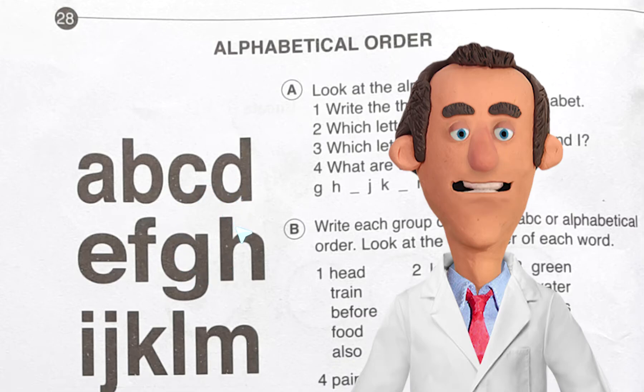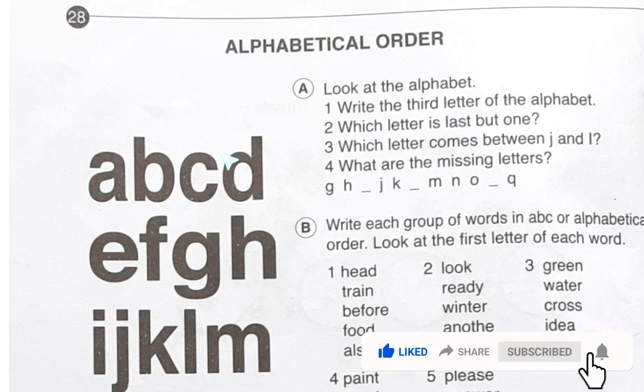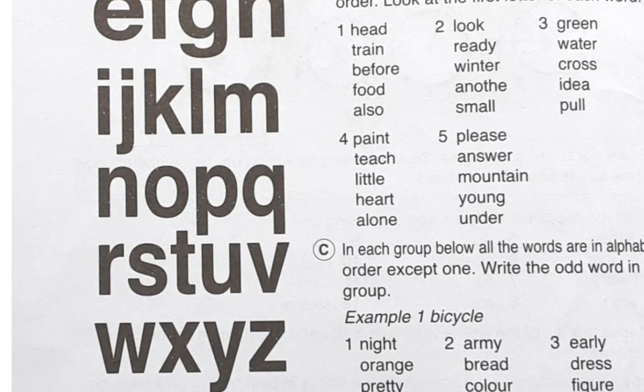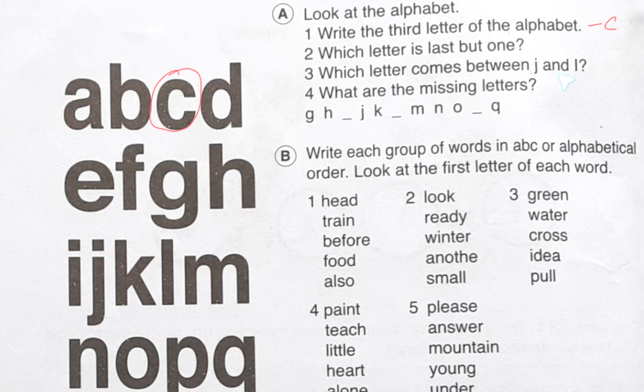Look at the alphabet. Write the third letter of the alphabet. We know what is that - this one. So here answer is C. Number two: which letter is last but one? This one is Y. Number three: which letter comes between J and L? We know that is K. Next one: what are the missing letters? H, I, K, L, M, and O, P, Q.